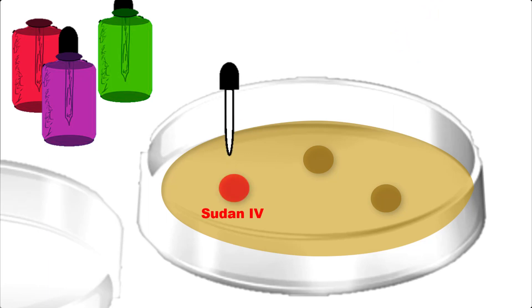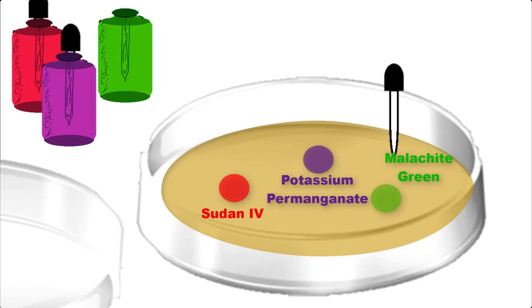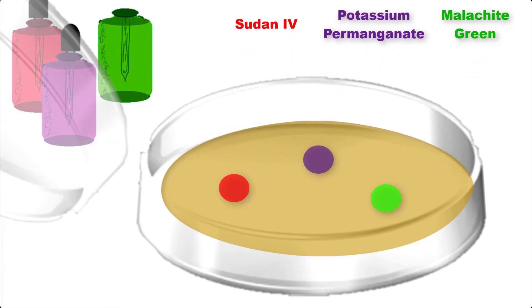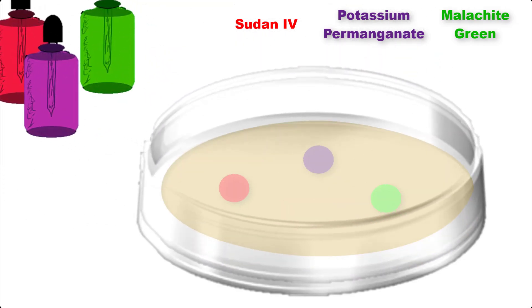Sudan will be depicted as red, potassium permanganate will be depicted as purple, and malachite green will be depicted in this experiment as green. This is how your plate would look at the beginning of the experiment.